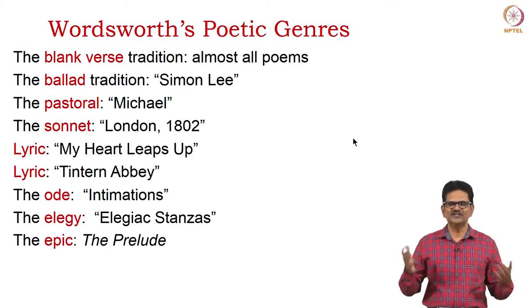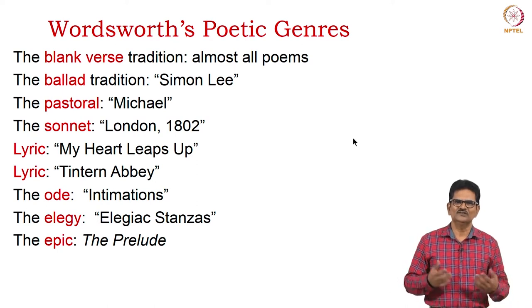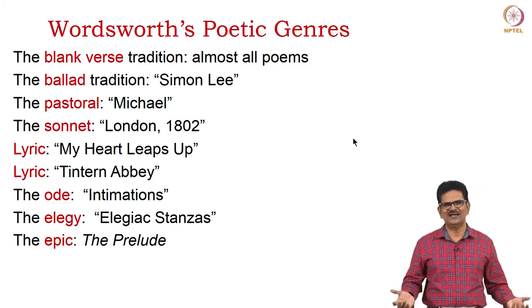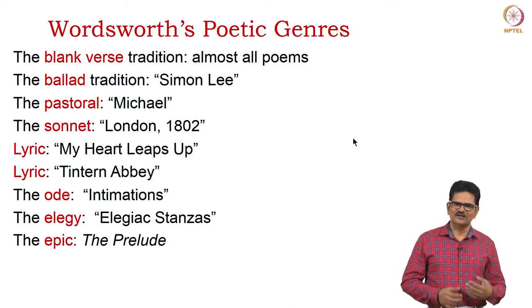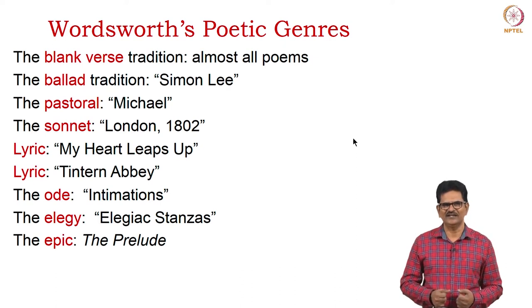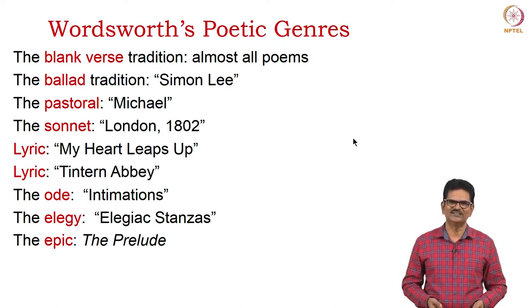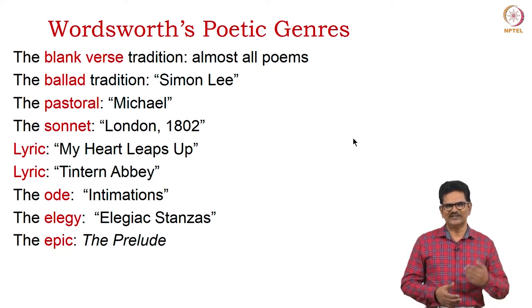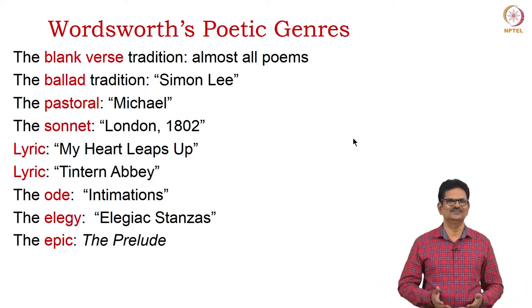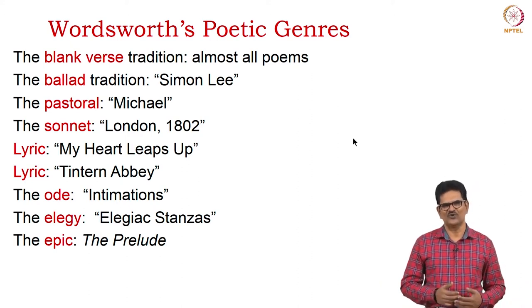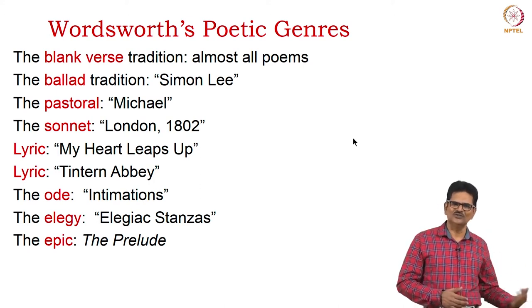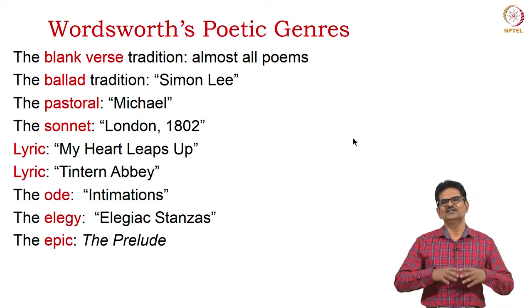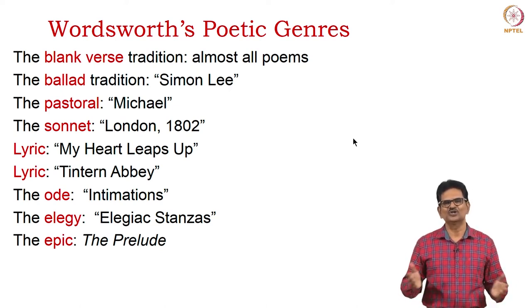Wordsworth experimented with different kinds of poetic forms. He used blank verse in most of his poems, drew on the ballad tradition (for example, Simon Lee), wrote from a pastoral setting as in Michael, and experimented with the sonnet form as in London 1802. Many of his poems are lyrical — examples include My Heart Leaps Up and Tintern Abbey. He also worked with the ode form in Intimations of Immortality, tried elegy in elegiac stanzas, and lastly produced an innovative autobiographical epic in English: The Prelude.